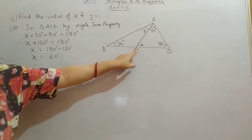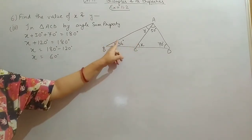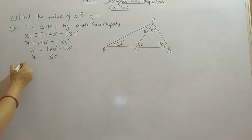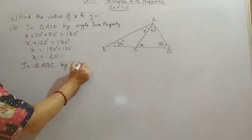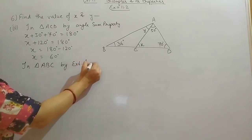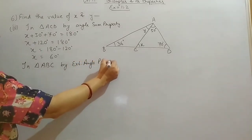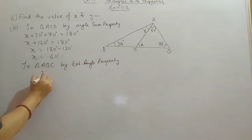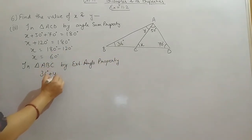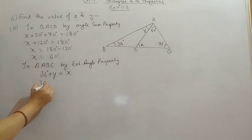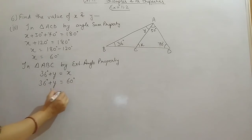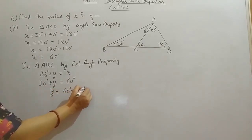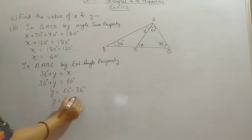This is an exterior angle, and this exterior angle equals the sum of the opposite interior angles. So in triangle ABC, by exterior angle property, 36 plus Y equals the sum of opposite interior angles, which is 60 degrees. So Y equals 60 minus 36, giving Y equals 24 degrees.